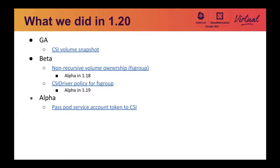In 1.20, we also added a new feature called passing pod service account tokens to CSI. This provides a way to obtain service account tokens for pods that the CSI drivers are mounting volumes for. Since these tokens are valid only for a limited period, this feature also gives CSI drivers an option to re-execute node publish volume to mount volumes.